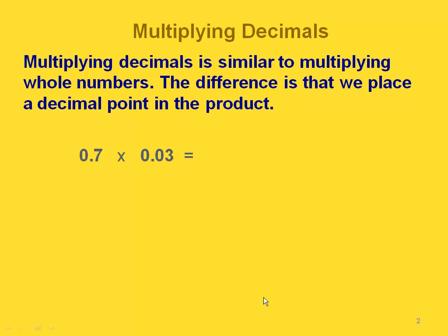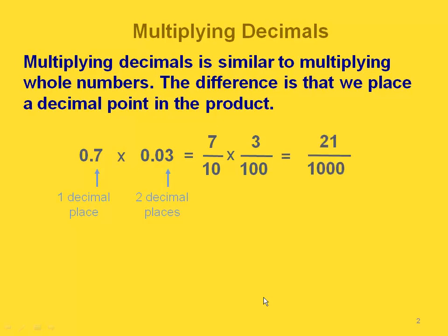For example, if we have 7 tenths times 3 hundredths, the 7 tenths has one decimal place, and the 3 hundredths has two decimal places. We could write each of these as a fraction: 7 tenths and 3 hundredths. If we multiplied straight across, we'd get 21 on the top and 1,000 on the bottom. That means our product, written in decimal form, is 21 thousandths. The product has three decimal places.